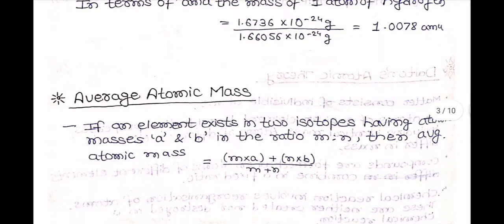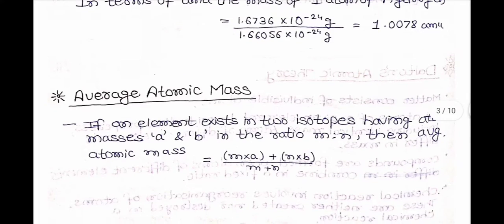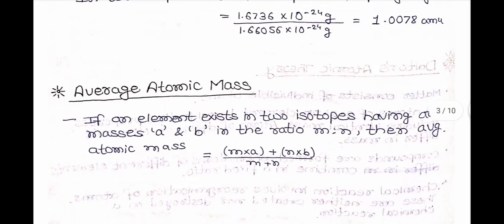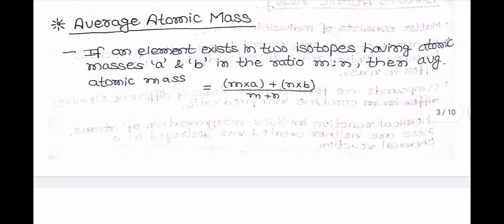Now, Average Atomic Mass: If an element exists in two isotopes having atomic masses A and B in ratio m:n, then average atomic mass = (m×A + n×B) / (m + n).